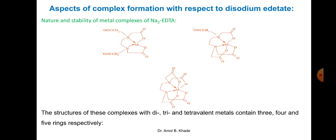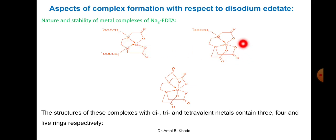The structure of these complexes with di-, tri-, and tetravalent metal ions contains 3, 4, and 5 rings respectively. The divalent metal ion forms a complex resulting in 3 rings; trivalent gives 4 rings; tetravalent gives 5 rings. More rings in the formed complex means greater stability of the complex.